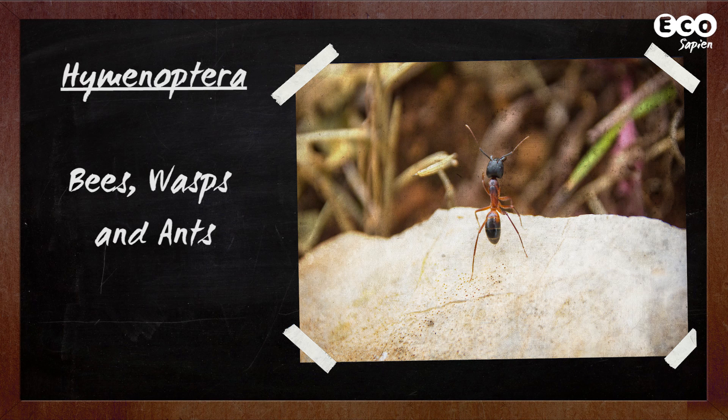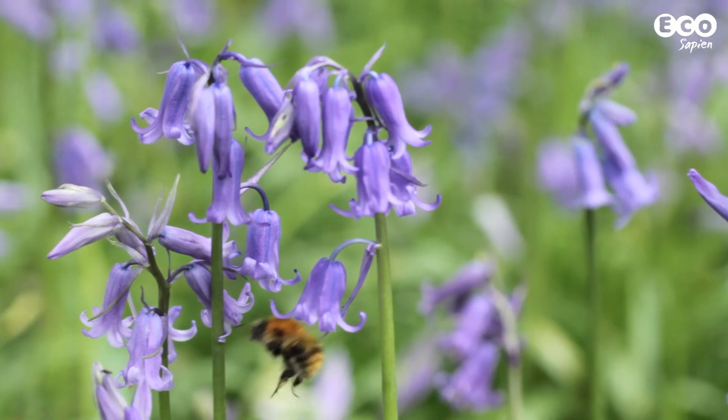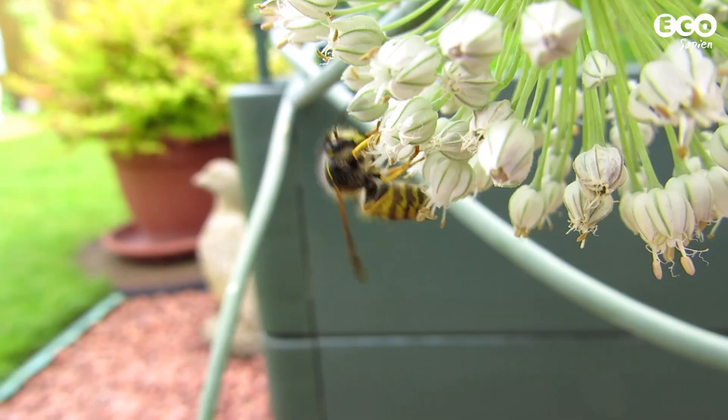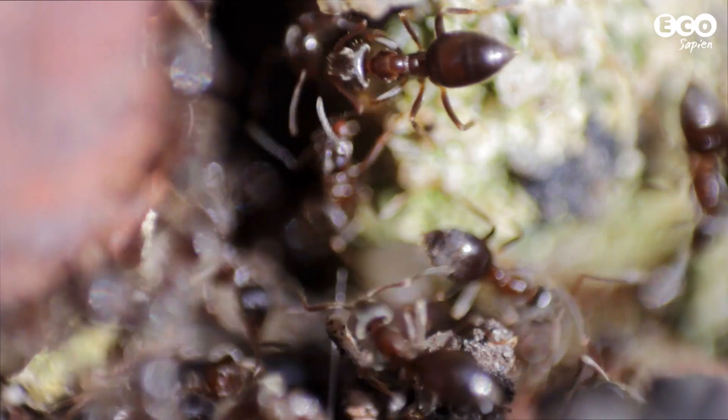Hymenoptera: the second order to contain examples of social behaviour. Hymenoptera contains bees, wasps, and ants.